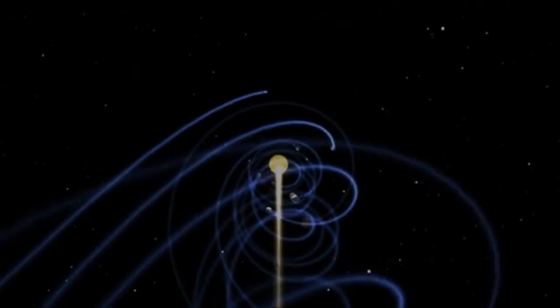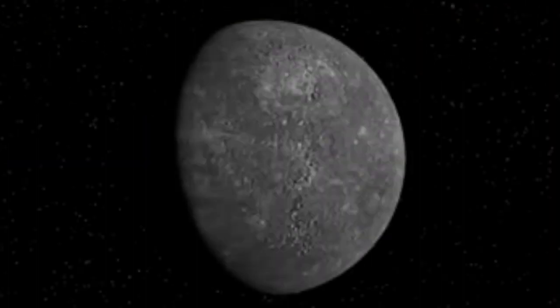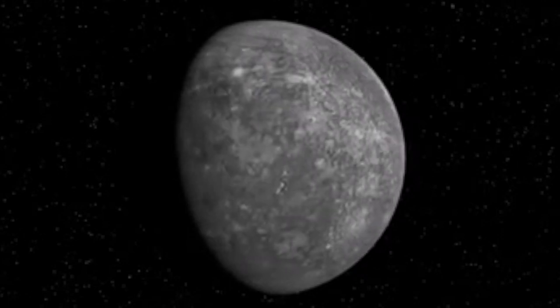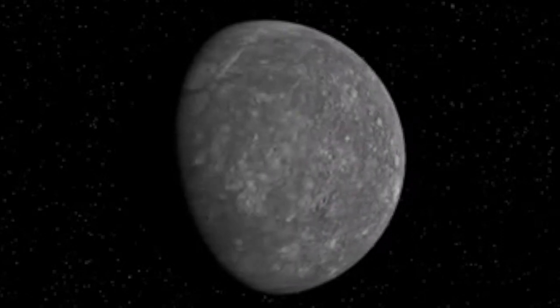As I'm sure you know, one year is the time taken for a planet to orbit the Sun, and one day is the time taken for a planet to rotate on its axis. Earth's year is 365.25 days, and one Earth day is 24 hours.